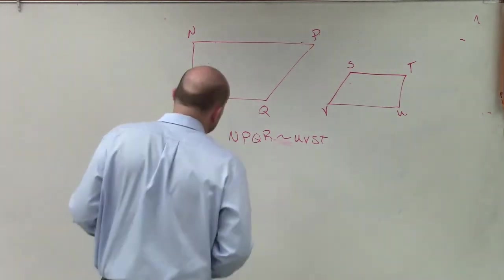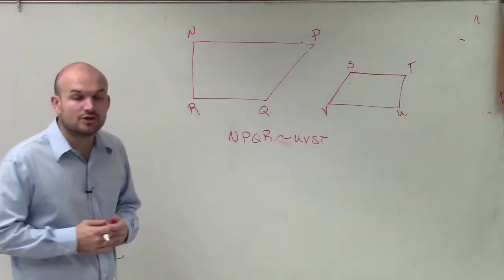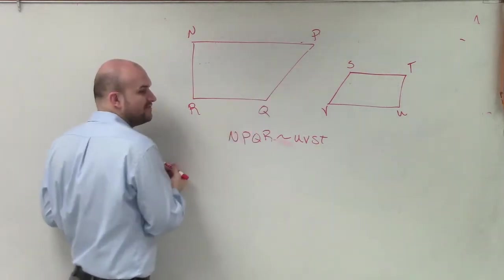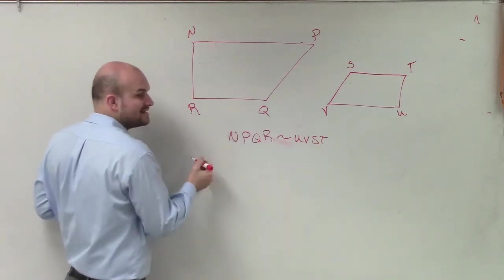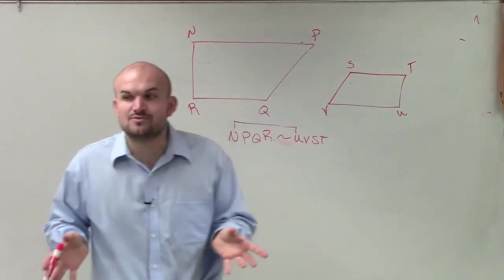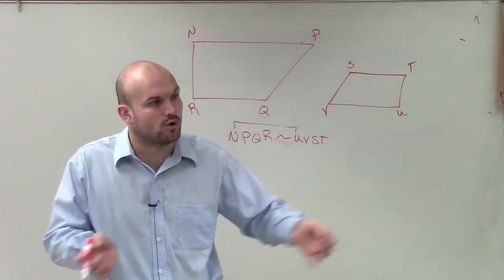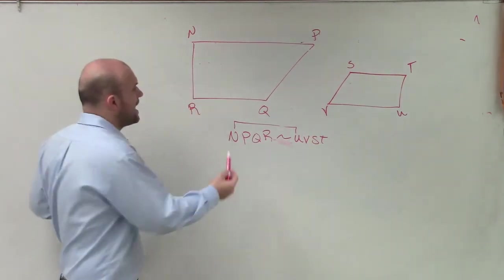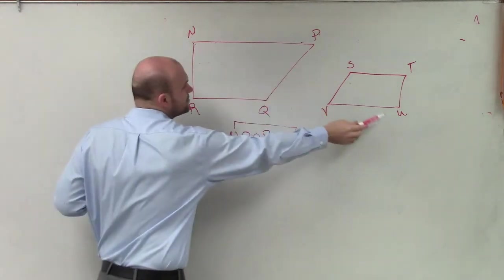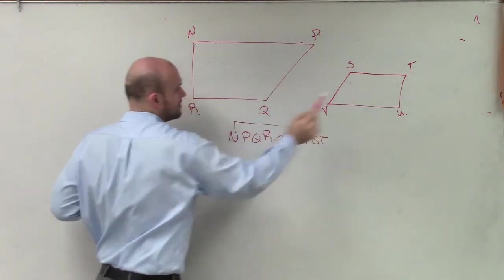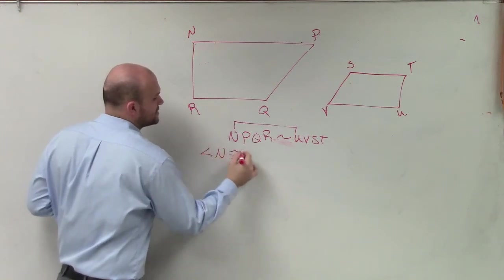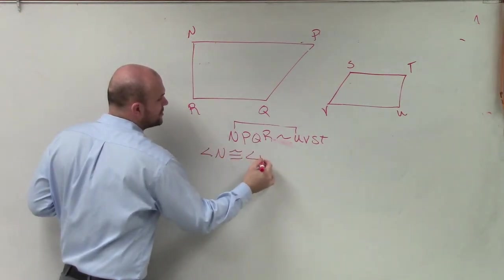So the first thing that I would want to do is write down my congruency statements for my angles. Now, you guys can look at the figure. But also, if you're provided a statement, you can also just look at it. Remember, because when we write statements, we have to write them in congruent order of their angles. So therefore, N is congruent to U. And look at N and U. Do those look like they're the same? Yes. So I can say angle N is congruent to angle U.